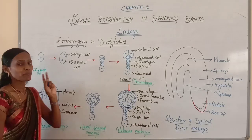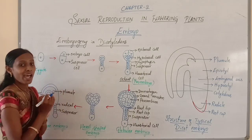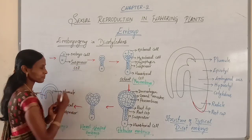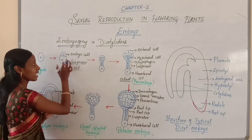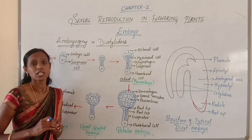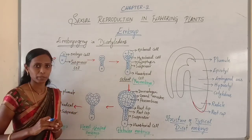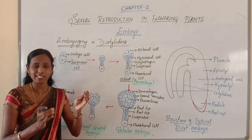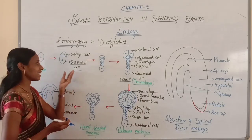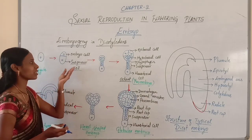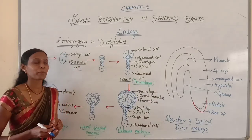Here you can observe the two unequal cells. The basal larger cell is called the suspensor cell, and the smaller terminal cell is called the embryonal cell.